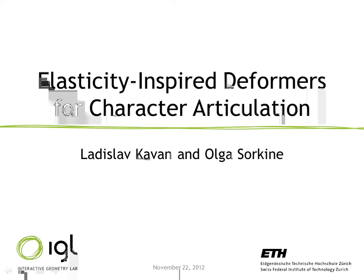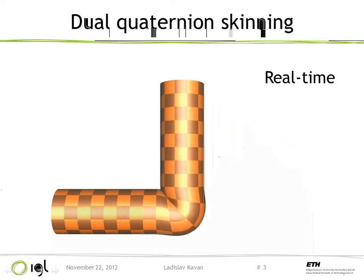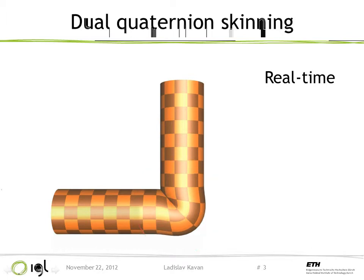My name is Ladislav and I will be talking about our project on elasticity-inspired deformers for character articulation. Let's take a cylinder and bend it with dual quaternion skinning — this is what we get. This is actually the correct solution; this is not a bug. About four years ago a rigging artist contacted me and asked if I could somehow fix this bulging artifact, and it turned out to be not so simple.